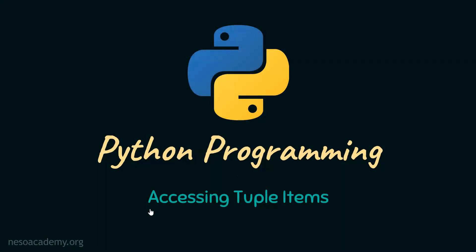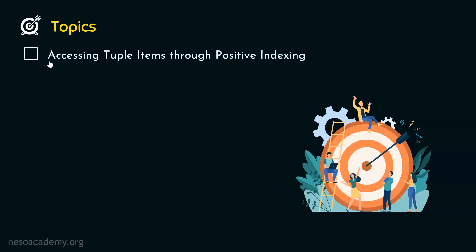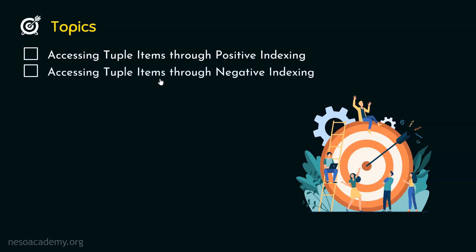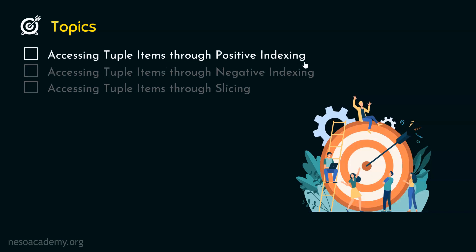In this presentation, we will understand how to access tuple items. Without any further delay, let's get started. The first topic is accessing tuple items through positive indexing. The second topic is accessing tuple items through negative indexing. And the third topic is accessing tuple items through slicing. Let's get started with the first topic: accessing tuple items through positive indexing.